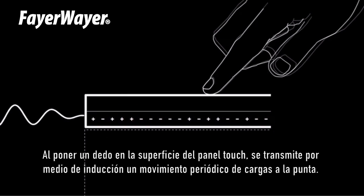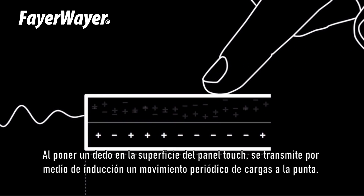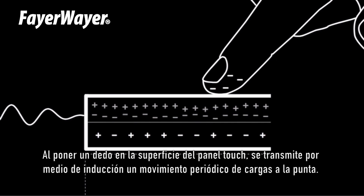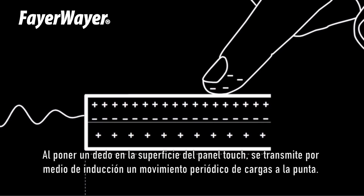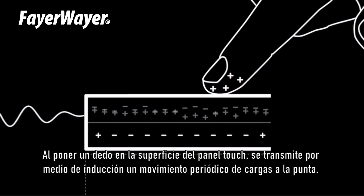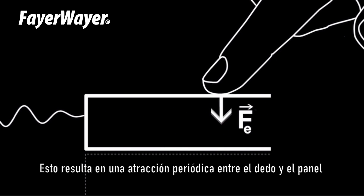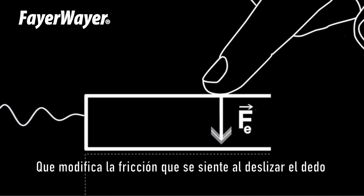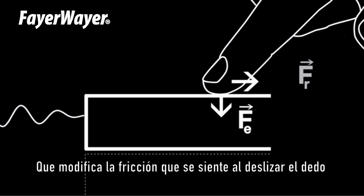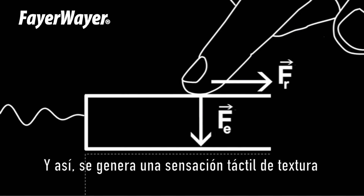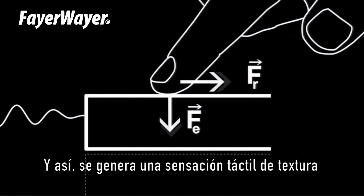When a finger is placed on the surface of the touch panel, a periodic motion of electrical charges is induced in the tip of the finger. This results in a periodic attraction force between the finger and the panel, modifying the friction between the sliding finger and the panel and thus producing a sensation of tactile texture.